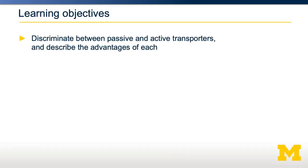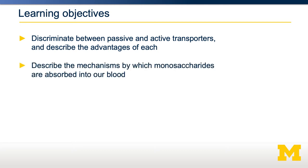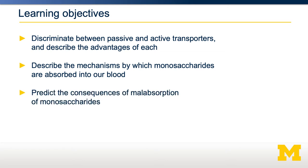After digestion of carbohydrates, we now must absorb the monosaccharides. This video will describe what we know about carbohydrate absorption. We're going to talk about the difference between passive and active transporters, describing the advantages of each. Second, we're going to describe how monosaccharides are absorbed from the lumen of our gut into our blood. And finally, we're going to talk about the consequences if this absorption is not efficiently done.